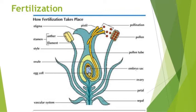After the pollen grain has reached the stigma of the flower, it will start germinating there. The pollen grain germinates on the stigma and produces a pollen tube — you can see in the diagram that yellow-colored tube arising from the pollen grain. This pollen tube runs all the way through the style and goes up to the ovary.